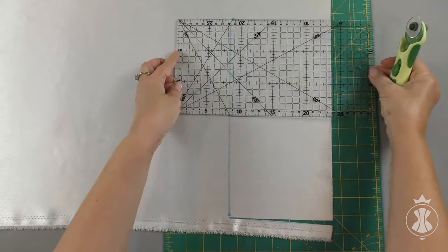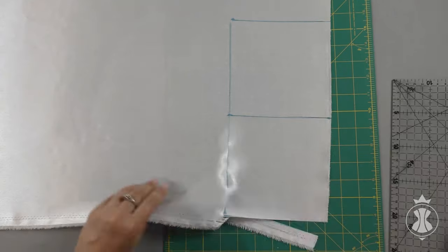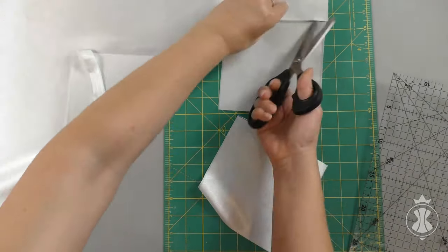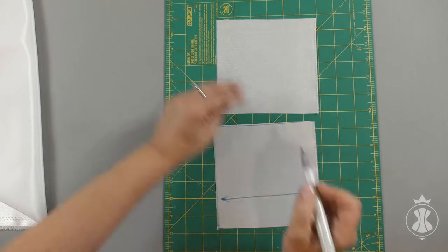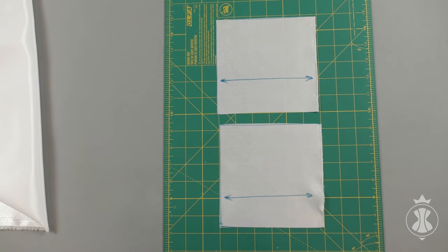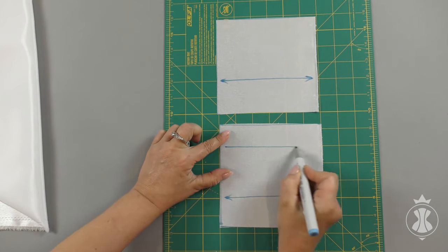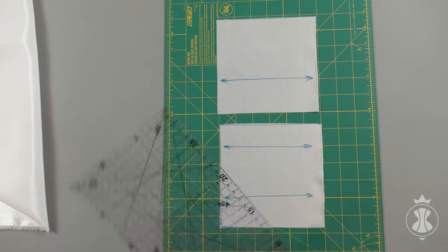I cut two identical squares with a side of 15 cm. I mark the direction of lengthwise grain on these squares. As a reminder, lengthwise grain always runs along the edge. Then I cut the squares into two.